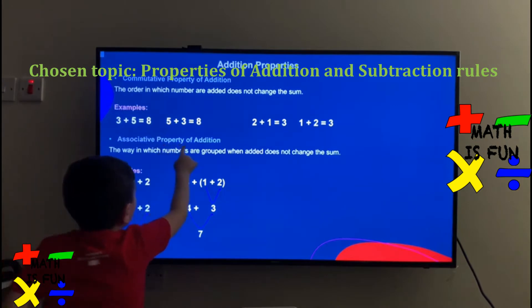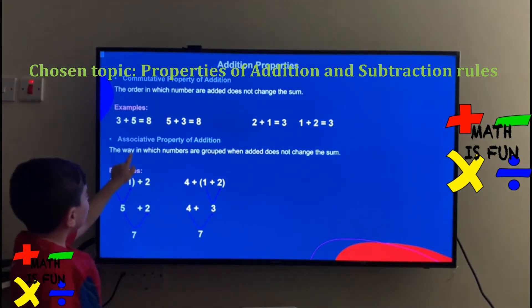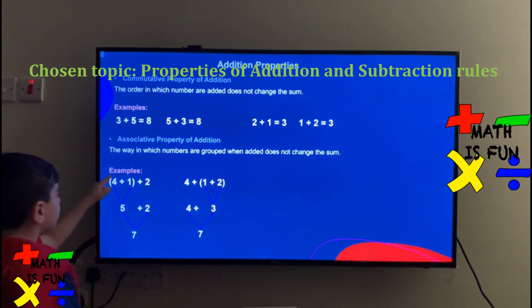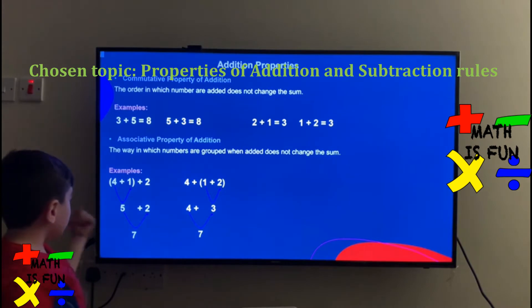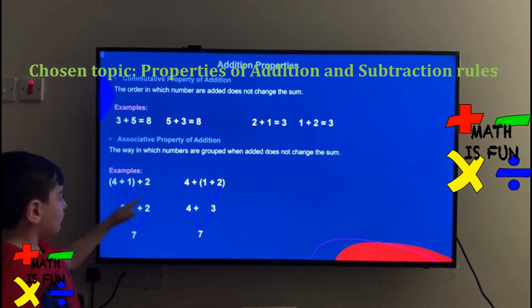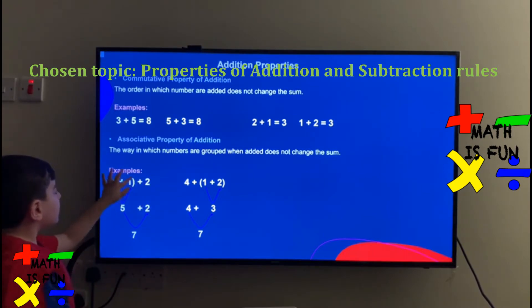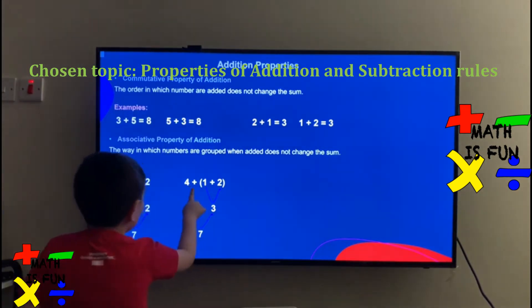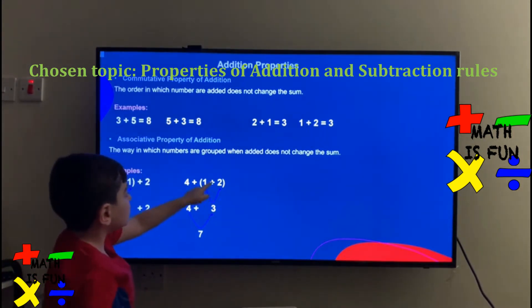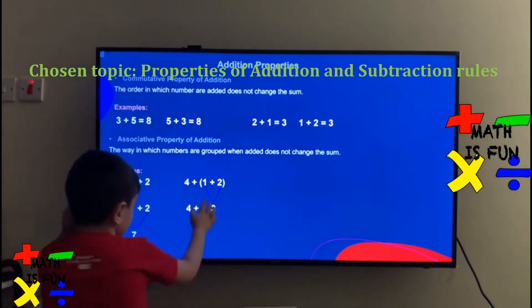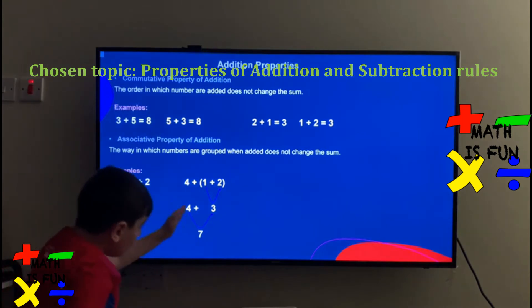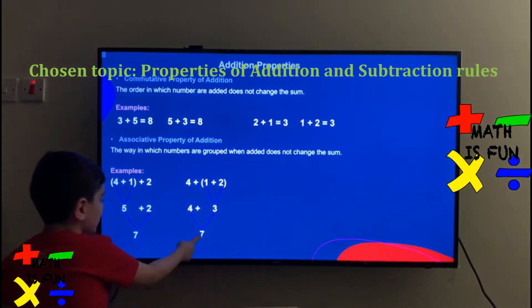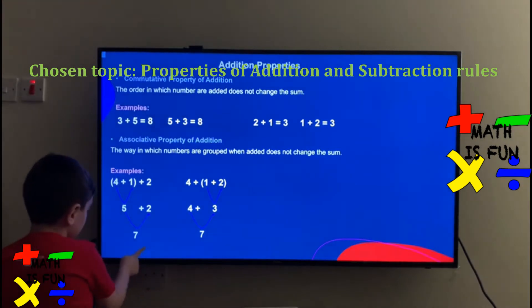Associative property of addition: the way in which numbers are grouped when added does not change the sum. For example, 4 plus 1 equals 5, the 4 plus 1 is grouped. Now 2 plus 5 equals 7. Here the 4 is not grouped with the others, just the 1 and the 2. So 1 plus 2 equals 3, and 4 plus 3 equals 7. The grouping changed but the sum didn't change.